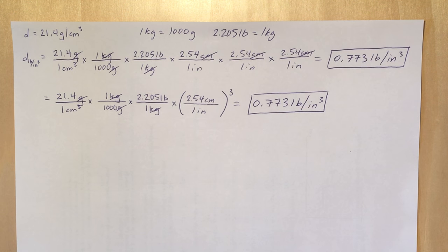So taking grams, canceling it, and getting it into kilograms using the conversion factor one kilogram equals a thousand grams, and then taking that to pounds using the next conversion factor.